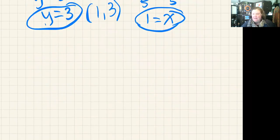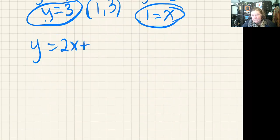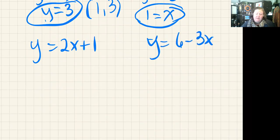I've done a bit of messy work there, so I'm going to go back and rewrite the original equations. I'm going to substitute in x = 1 and y = 3 into both of these. So this is 3 = 2(1) + 1.